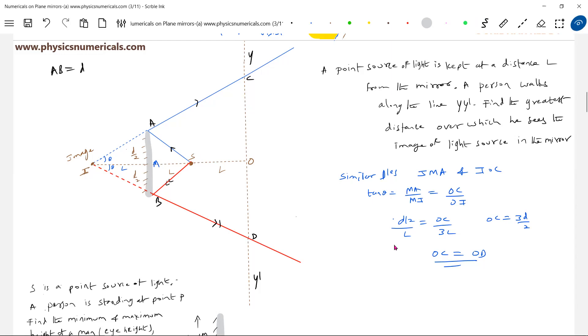Because the source S is kept symmetrically with respect to plane mirror. So what is the length over which you will see the person? Should be equal to OC plus OD. So it equals 3D by 2 plus 3D by 2. Distance will be 3D. For a length 3D distance, this image will be visible. Once the person is here, the image will not be visible. When the person is here, the image will not be visible.